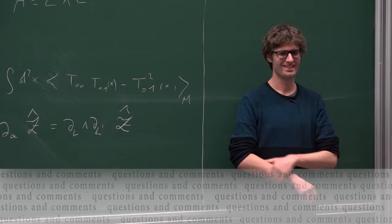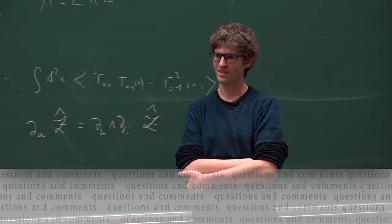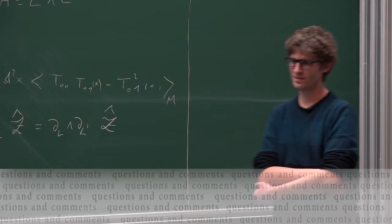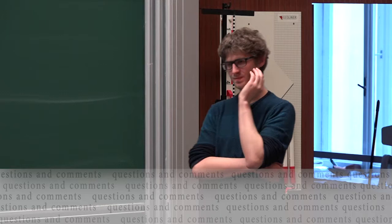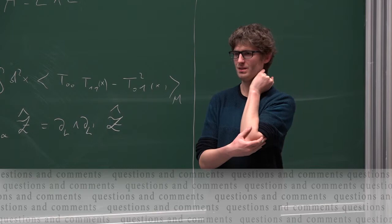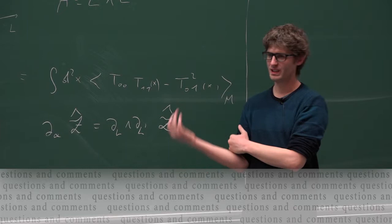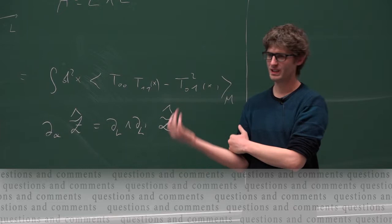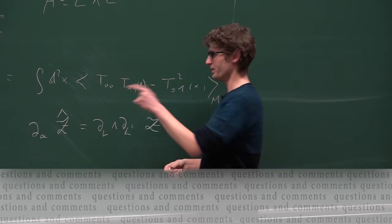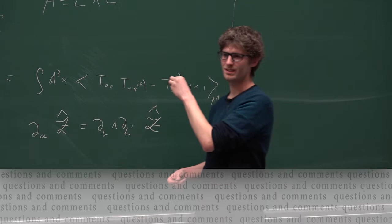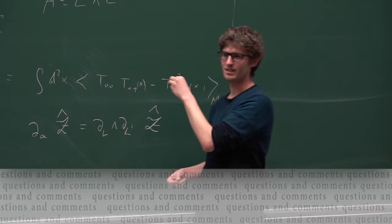I also have a question. So, now you have been talking about putting the theory on the torus, but at some point it seems to be important that you could take these two operators and take them quite far apart, so that you could factorize the expectation value and write this very important differential equation. Mm-hm. So, is it just a technical thing and on the torus you can still do it, or should I be worried about it? On the torus, I will not need to factorize the expectation value.